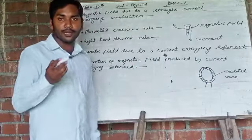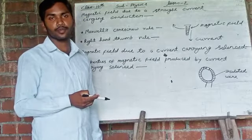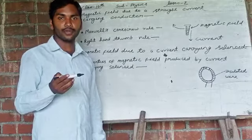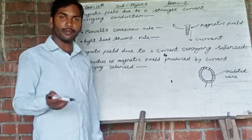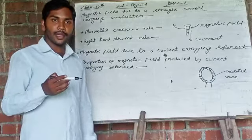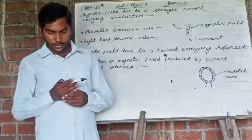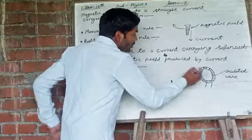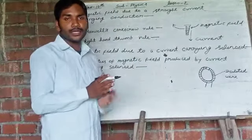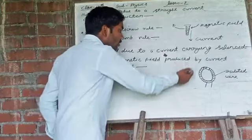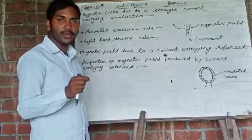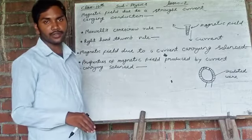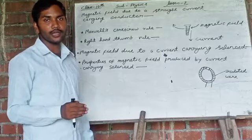Magnetic field also depends upon the strength of current. When the current is strong, the magnetic field will be strong, and if the current is weak, the magnetic field will also be weak. The magnetic field inside the solenoid is uniform — they are nearly parallel inside the solenoid. But outside the solenoid, the magnetic field will be very weak. These are the characteristics of magnetic field produced by a current carrying solenoid.